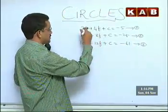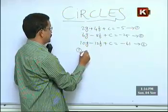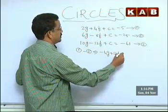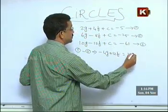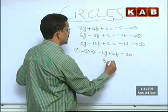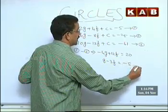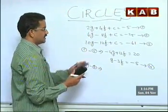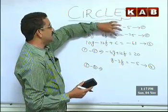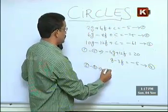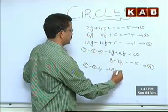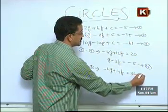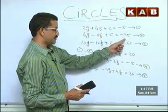Now let us solve the first two equations. If you subtract equation 1 from equation 2 (i.e., 1 minus 2): 2g - 6g = -4g, 4f + 8f = 12f, and C and C cancel, equal to 20. Dividing by -4, we get g - 3f = -5. I call this the fourth equation. Again doing equation 2 minus equation 3, in the second and third equations I am cancelling C. That gives us -4g + 4f, and -25 minus (-61) = 36. This is the fifth equation.